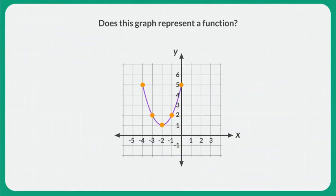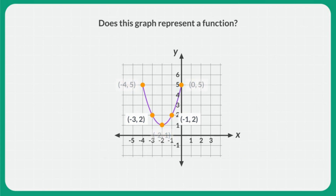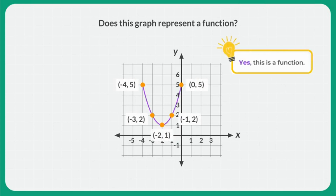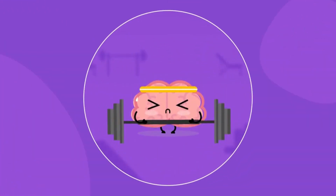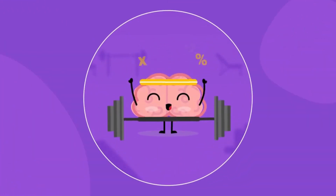On your own, figure out if this graph represents a function. First, you can label all the points. There are points that have the same output, but that's okay. The inputs of negative 3 and negative 1 can share an output of 2, and the inputs of negative 4 and 0 can share an output of 5. Each input has only one output, so this graph does represent a function. That's all for now. Thanks for building your math muscles with us.